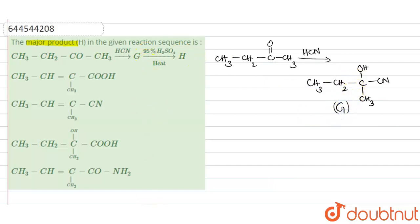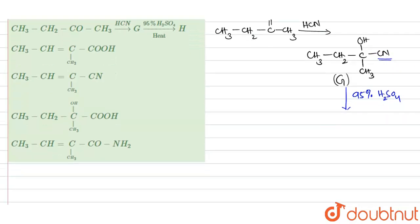Then G on treatment with 95% H2SO4. So G when it's treated with 95% H2SO4, it gives, this hydrolyzes this cyanide group to carboxylic acid.